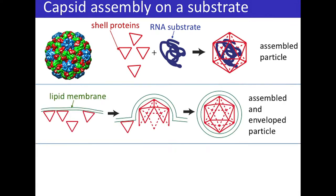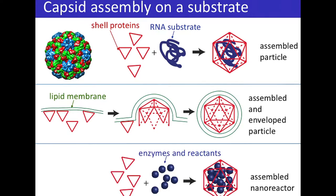What I'd like to do today is look at two different substrates with different architectures than RNA and ask how they affect the assembly process — how the pathways and outcomes depend on the properties of the substrate. The first substrate is proteins assembling on a fluid membrane like a lipid bilayer, in the context of assembly and budding during egress of an enveloped virus. The second moves into the bacterial world, looking at icosahedral shells assembling around cargo consisting of many unconnected particles.